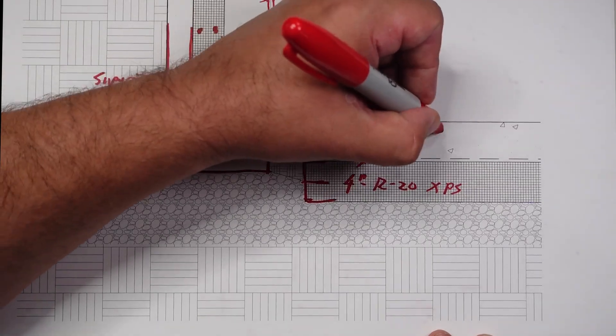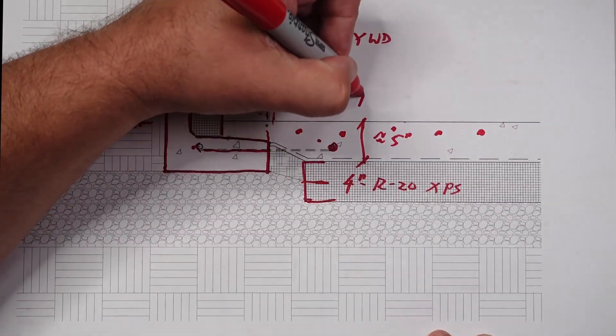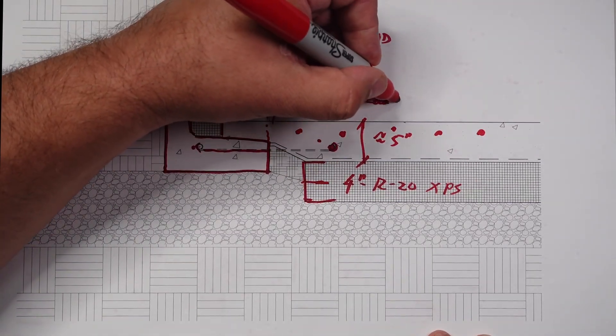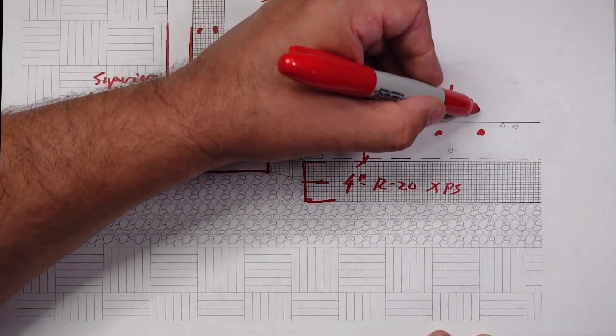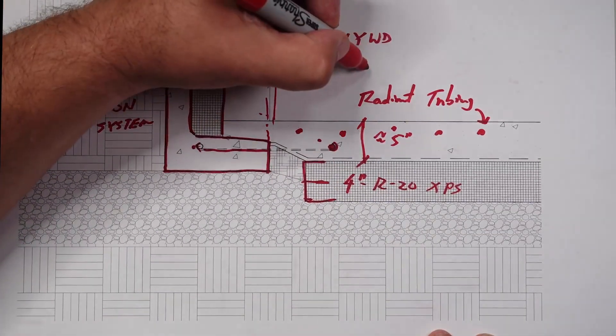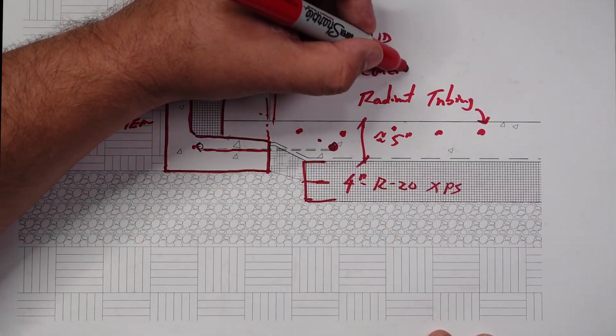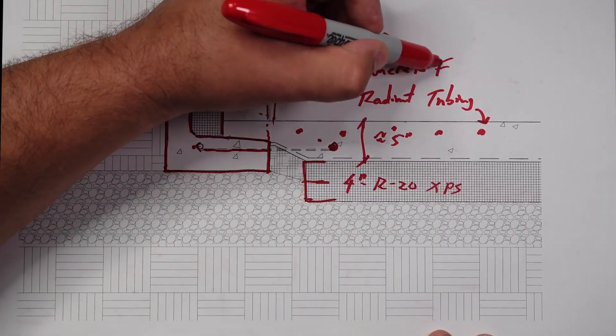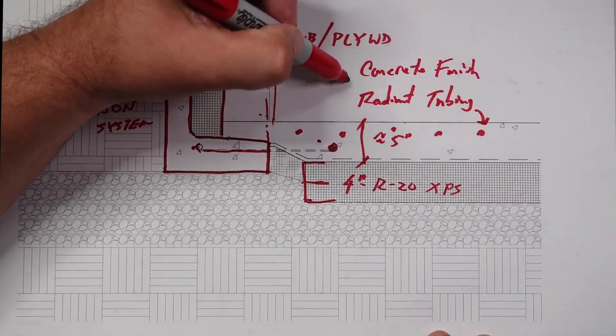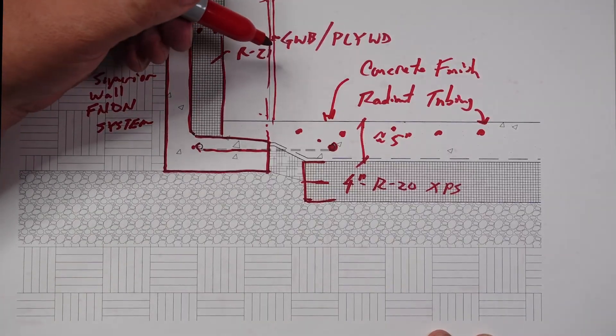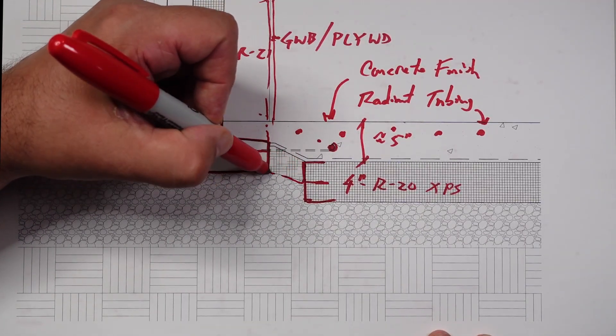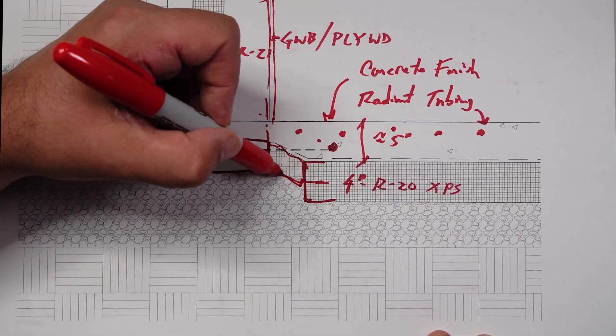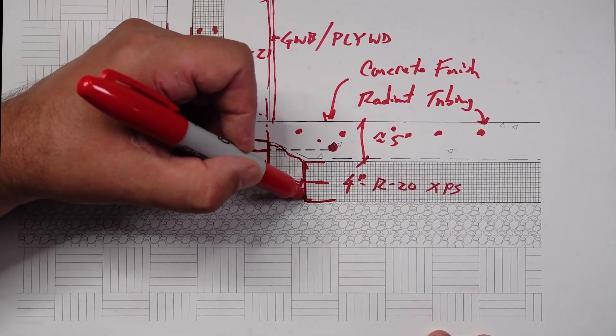The slab itself is roughly about five inches thick and that is going to have a series of radiant tubing that runs through it. It's a radiant floor concrete finish happening there.